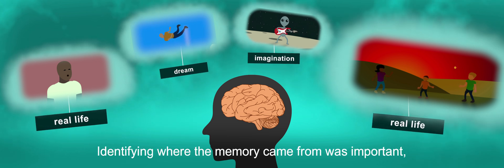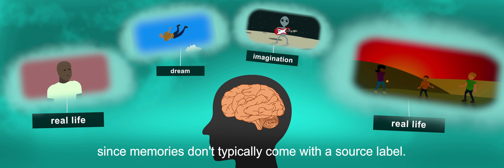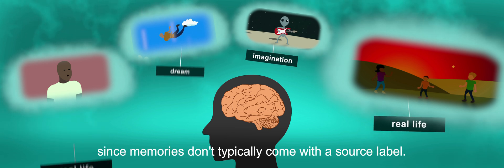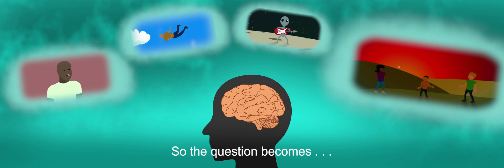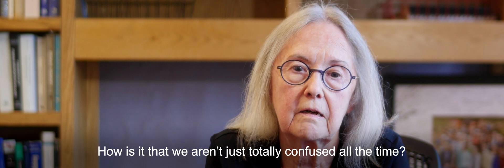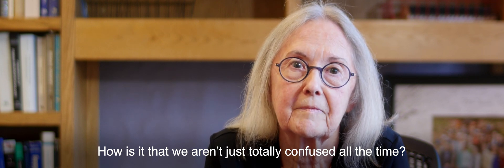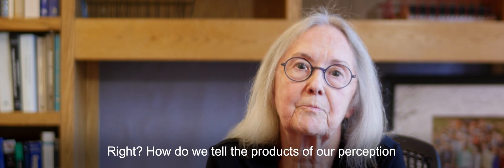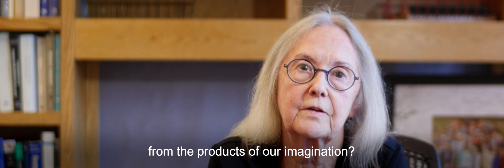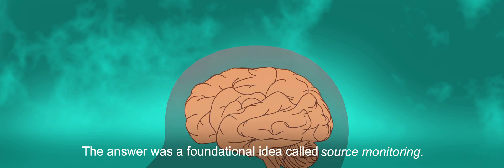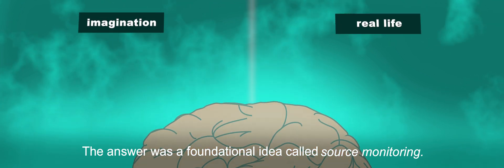Identifying where the memory came from was important, since memories don't typically come with a source label. So the question becomes, how is it that we aren't just totally confused all the time? How do we tell the products of our perception from the products of our imagination? The answer was a foundational idea called source monitoring.